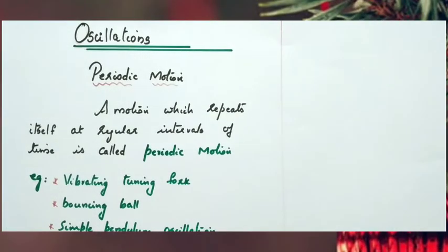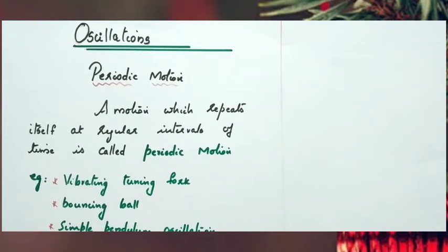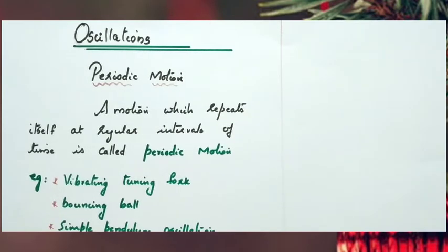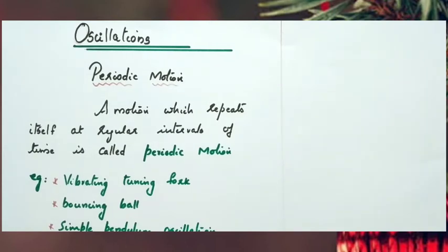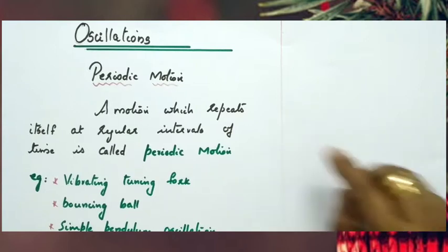Today we are going to study a new chapter: oscillations. In earlier chapters on motion, we learned about rectilinear motion, motion of a projectile, uniform circular motion, and motion of planets around the sun. In your childhood you must have observed your friends swinging on a swing. This motion is repetitive and different from the motion of planets around the sun — the swing moves to and fro from its mean position. All these types of motion are included in periodic motion.